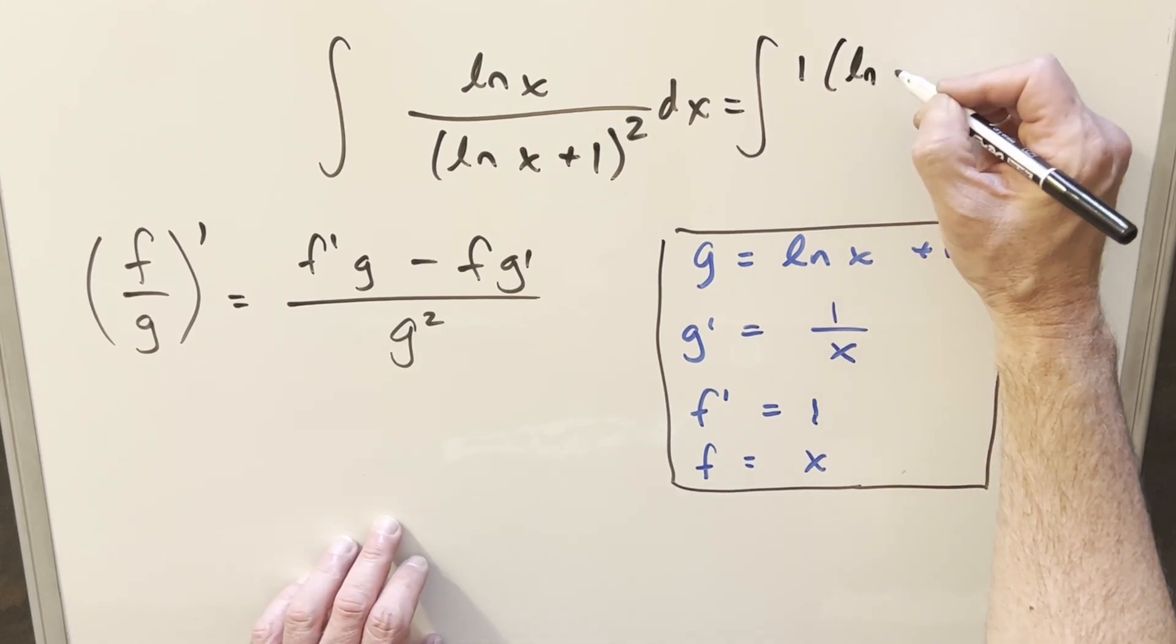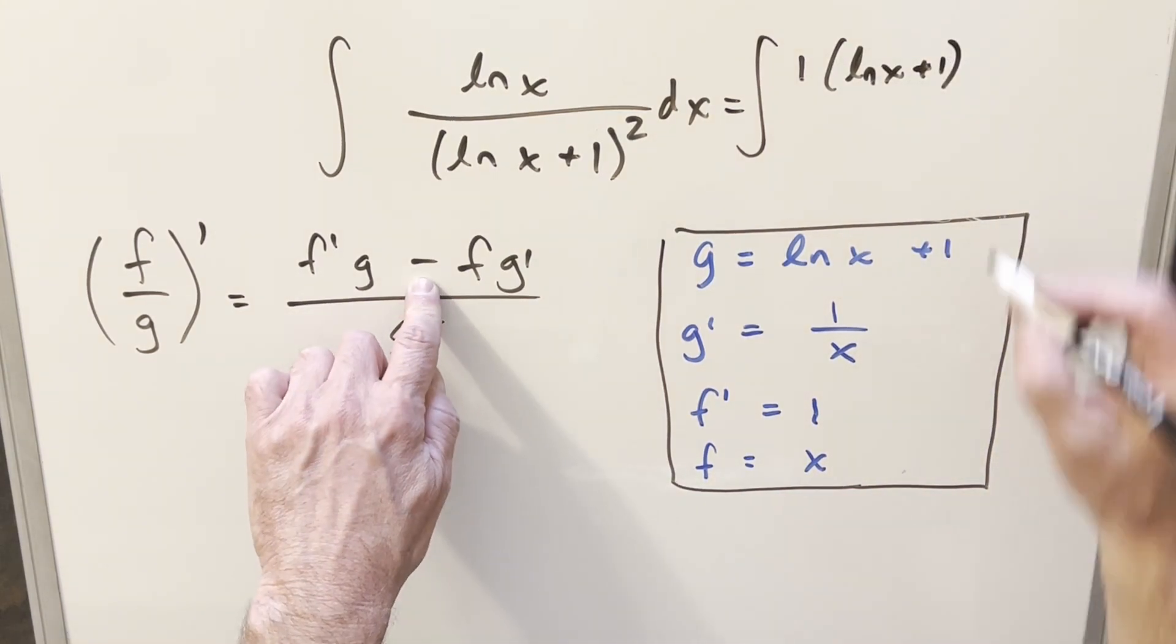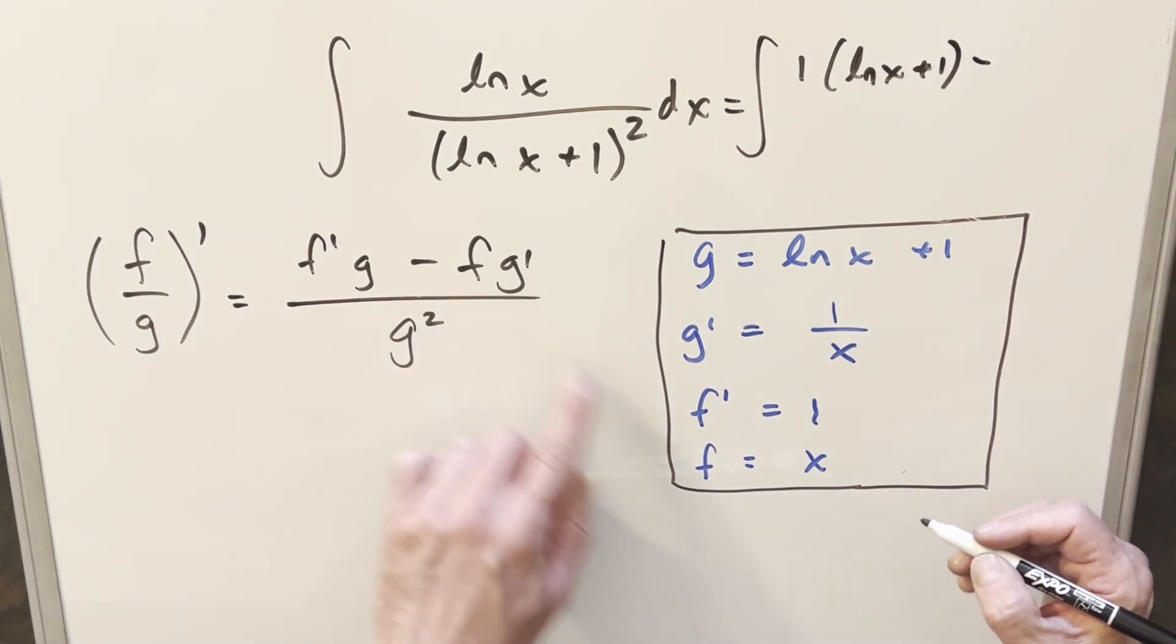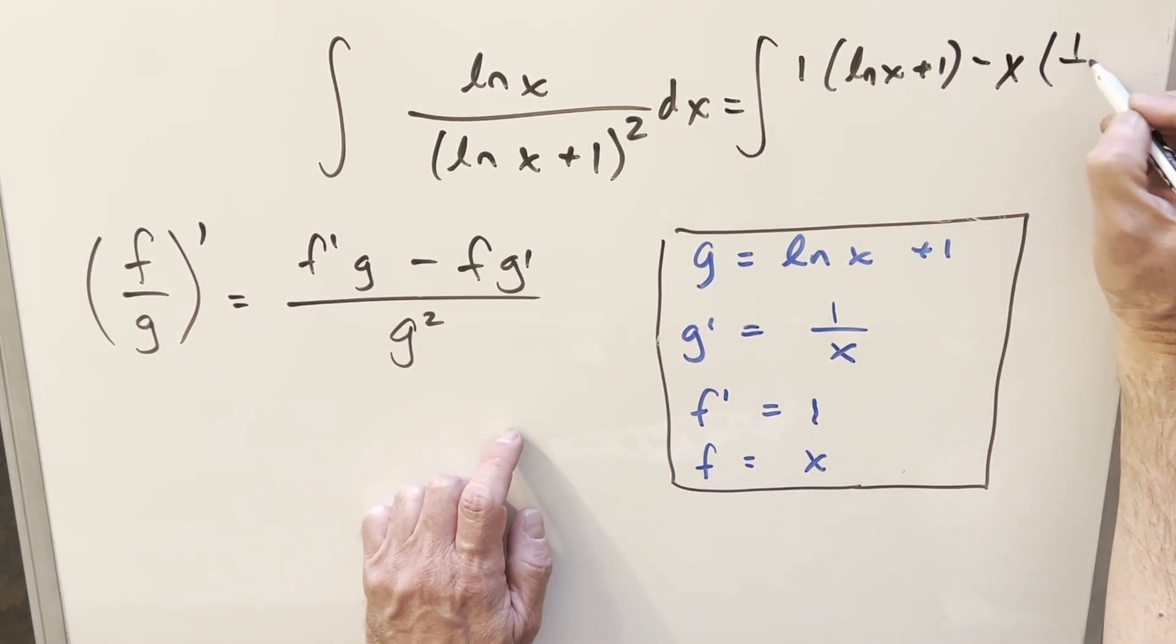So our f prime is going to be 1 times our g, which is going to be natural log x plus 1 here. And then for the second part, we have minus f times g prime. So f is just going to be x and g prime 1 over x.